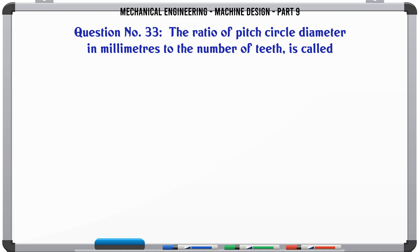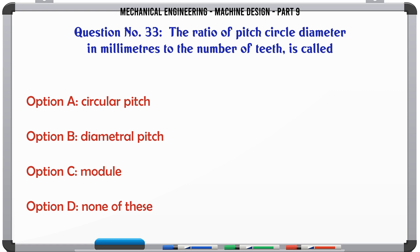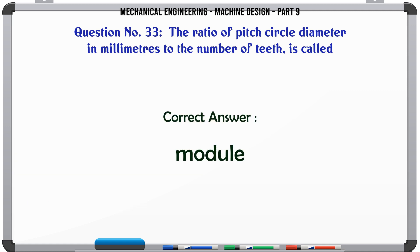The ratio of pitch circle diameter in millimeters to the number of teeth is called: A. Circular pitch, B. Diametral pitch, C. Module, D. None of these. The correct answer is Module.